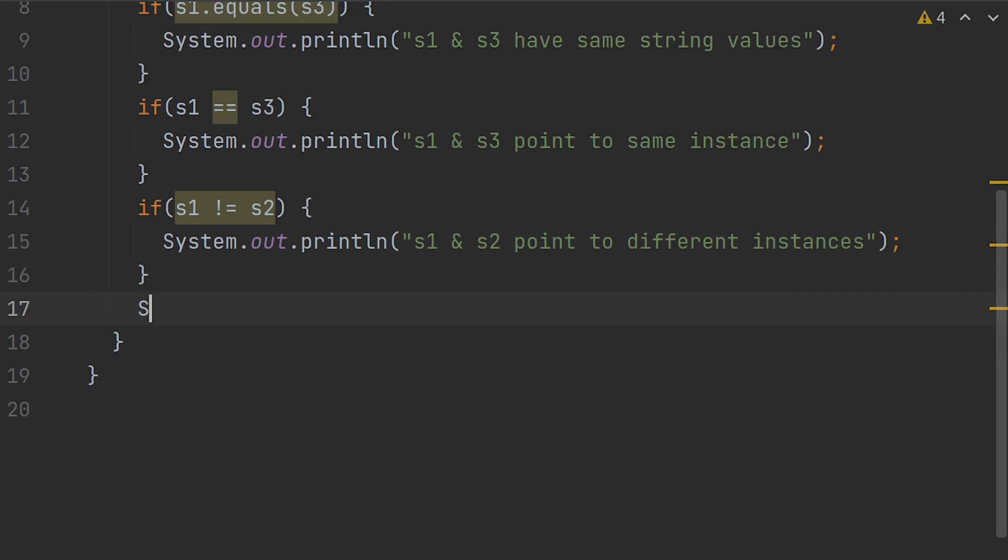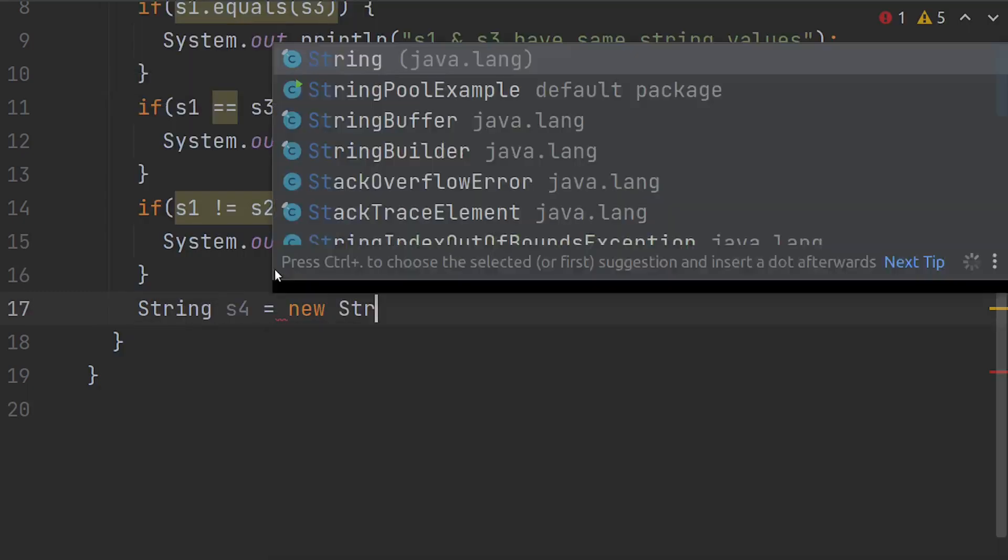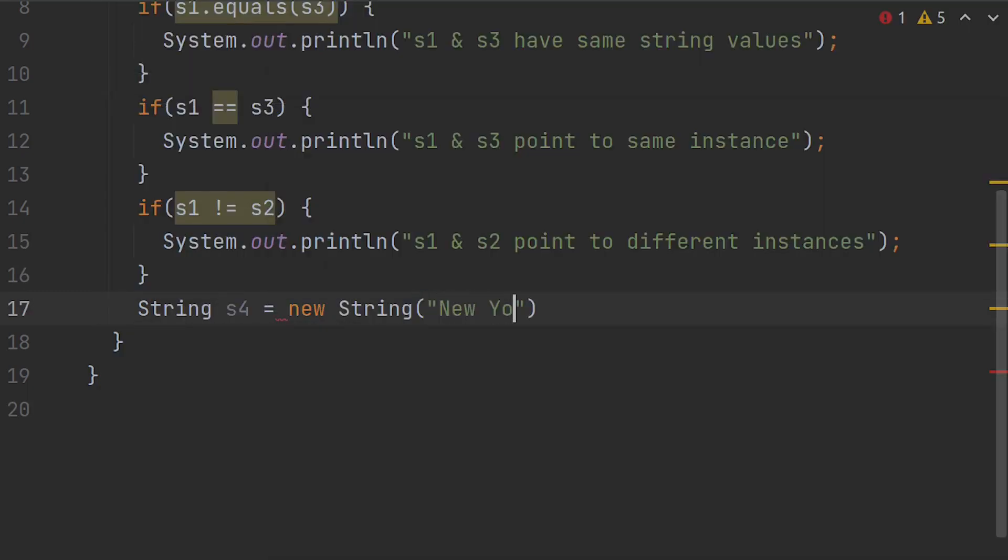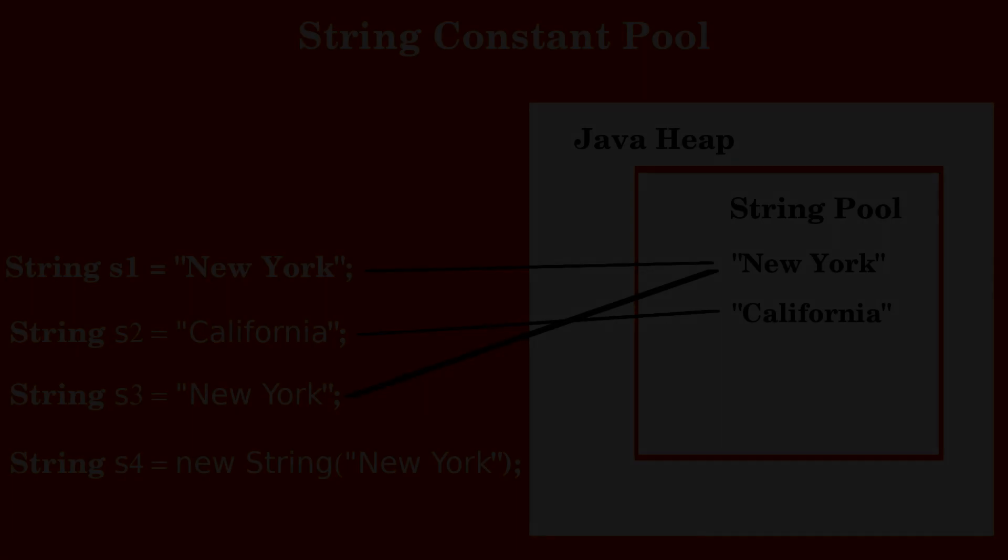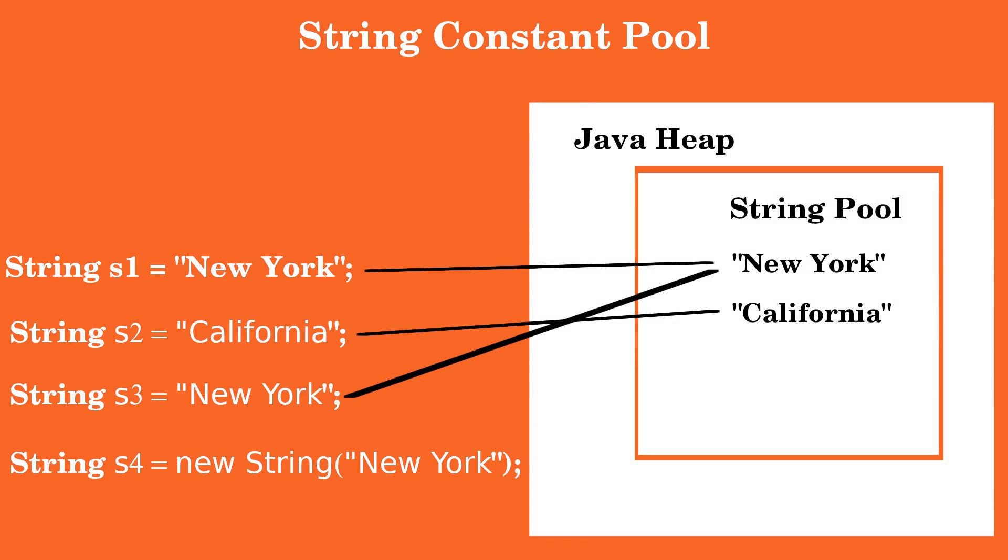Now let's look at the other example. Say string s4 equals new string of New York. What will happen when this statement gets executed? Firstly, the JVM creates a new string in the string pool when it sees the literal New York. Now since we are creating a new string instance, here the JVM will create another new object inside the heap space and outside the string pool and the reference variable s4 points to this object in the heap space.